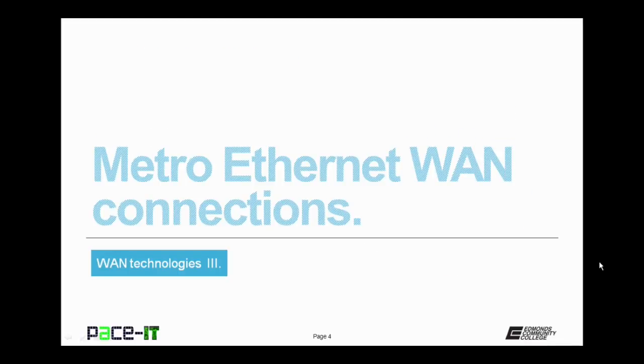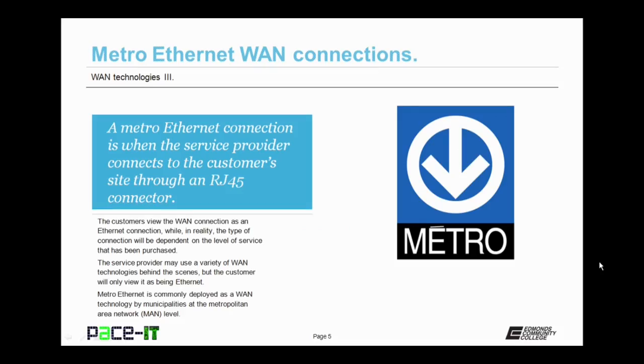I'm going to begin by discussing Metro Ethernet WAN connections. A Metro Ethernet connection is when the service provider connects to the customer's site through an RJ45 connector. The customer will view that WAN connection as an Ethernet connection, while in reality, the type of connection will be dependent upon the level of service that has been purchased.